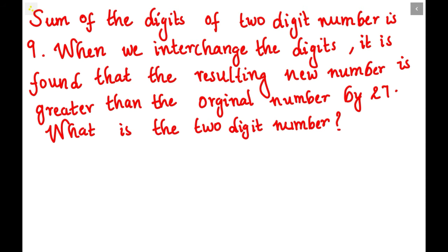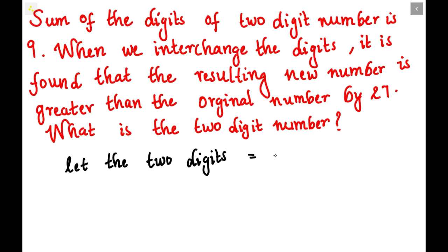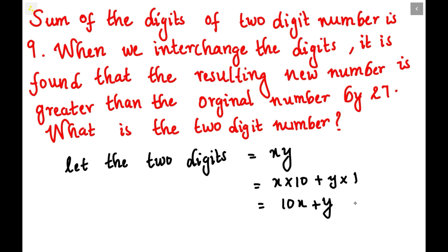Let us start solving. Let the two digits be x and y. x is in the tens place, y is in the ones place. This x and y form our original number. When we expand this, x is in the tens place so it will be x into 10, plus y into 1, giving us 10x plus y. This is our original number.